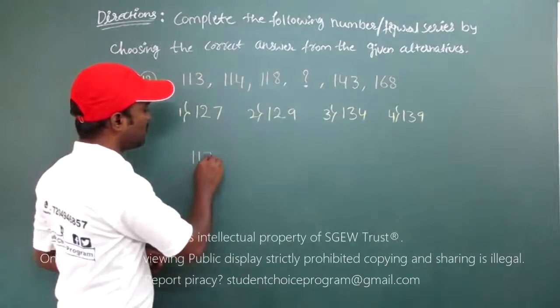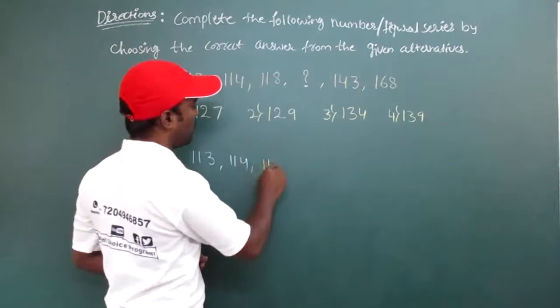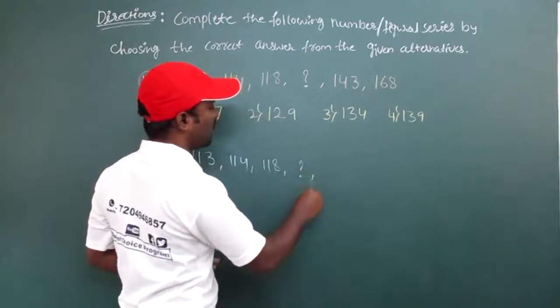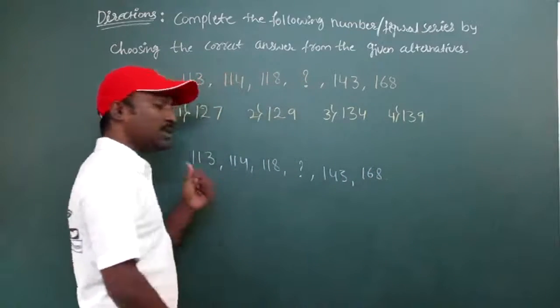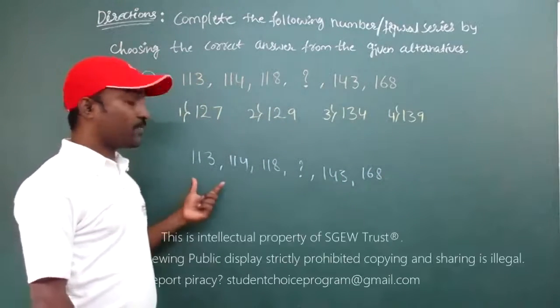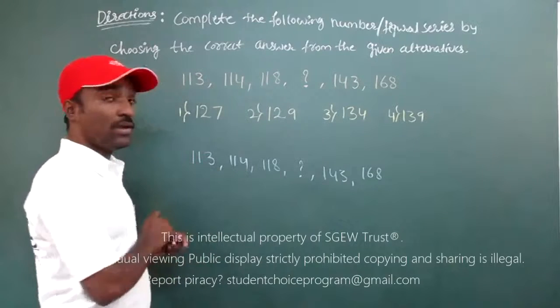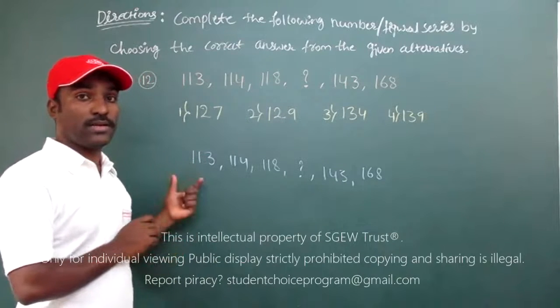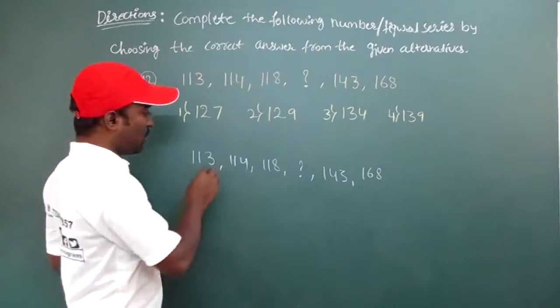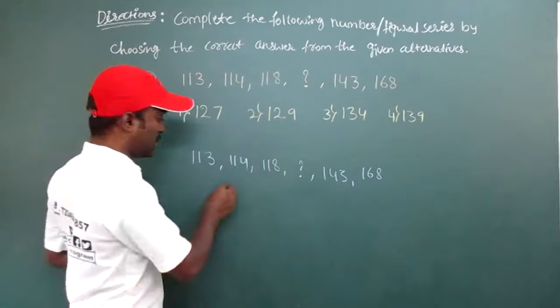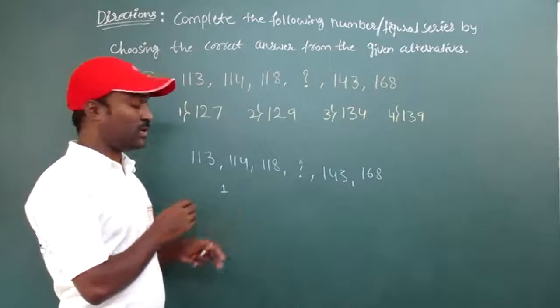The question is 113, 114, 118, 143, 168. So this is the given question. So now what I will do? I will take difference of neighboring numbers. I will subtract 114 minus 113 or 114 minus 113. We have to just take difference. 114 minus 113 will give me 1.